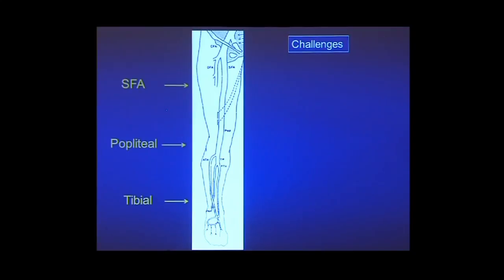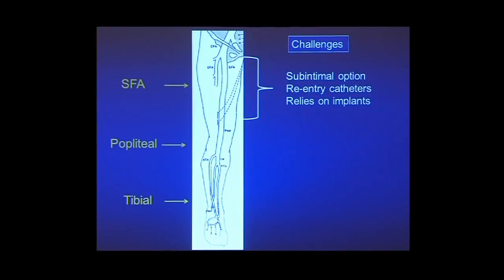Let's get back to the lower extremity. The popliteal is often either lumped in with the SFA or completely ignored — we kind of have above the knee and below the knee. But if you separate these three areas, you see that the challenges are different. In the SFA, the subintimal option is realistic and reasonable because we have reentry catheters, and reconstruction is typically reliant upon implants, namely stents.